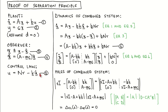Let's first look at the components of the full system. The plant is described with the standard state variable equations, where we assume that d is equal to zero. We label them as equation one and equation two. We have previously defined the estimation error x̃ as the difference between the actual and estimated states, which we call equation three. We have also previously derived the dynamics of the observer in terms of the estimation error, which we label equation four.